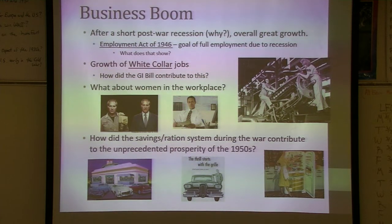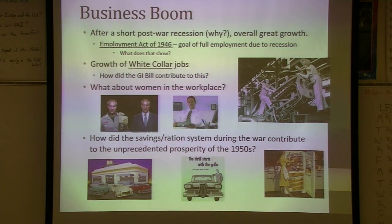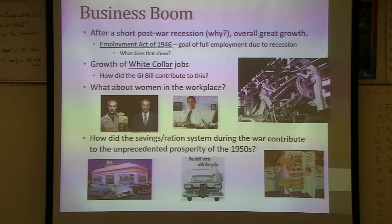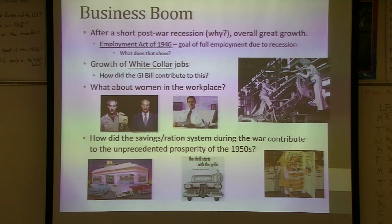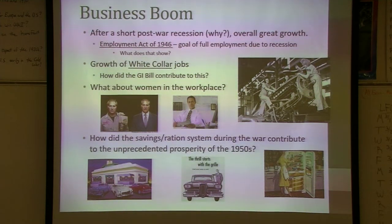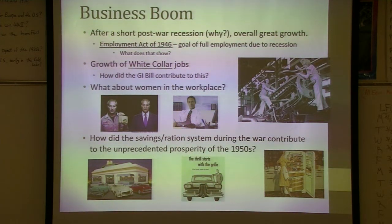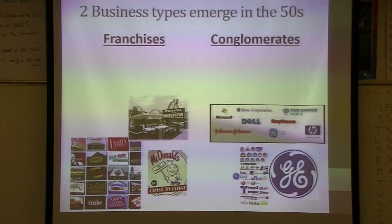As shown in America's Story of Us, the average American family made 15 times the amount of money as the average European family. We were number one by a long run. Where right now we're number one looking over our shoulder as China seems to be catching up — a couple of years ago they passed Germany for number two — at that time there was nobody even in sight.